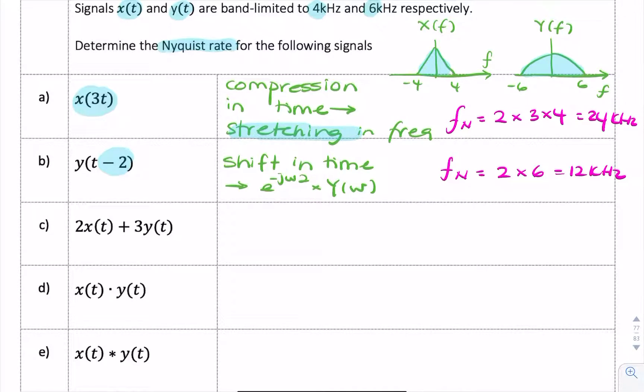Now here in C, we have the sum of two signals. Now we don't care about these coefficients; what matters is the bandwidth, and the bandwidth of X and Y we know to be 4 and 6 respectively. And remember, the rule of thumb is when you add signals together, you always look at the higher of the two bandwidths.